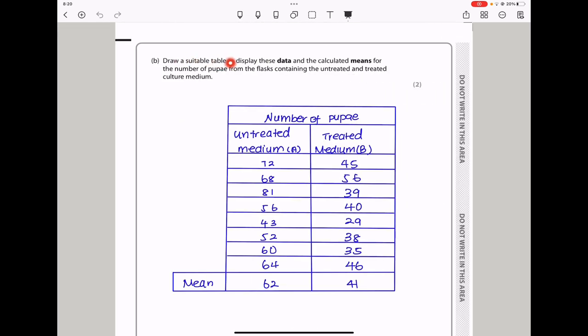Here they said draw a suitable table to display these data and calculate means for the number of pupae from the flasks containing the untreated and treated flasks. The key thing in presenting a table, you need to label and include units. These are the raw results from the previous page of untreated and treated, and the calculated means are 62 and 41. The total divided by 8 gave me 62, and the total divided by 8 gave me 41.